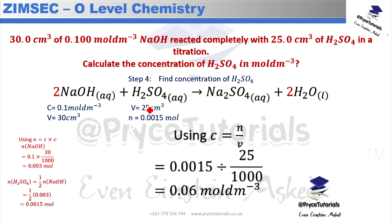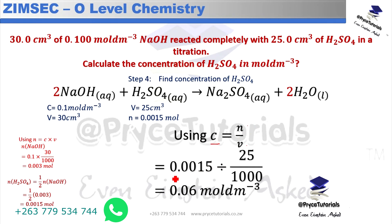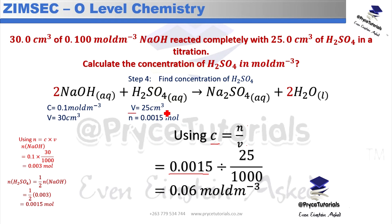The fourth step is to find the concentration of H₂SO₄. Using the formula: concentration = number of moles ÷ volume, we substitute 0.0015 divided by 25/1000, converting the 25 cubic centimeters to dm³ by dividing by 1000. This gives a concentration of 0.06 mol/dm³.